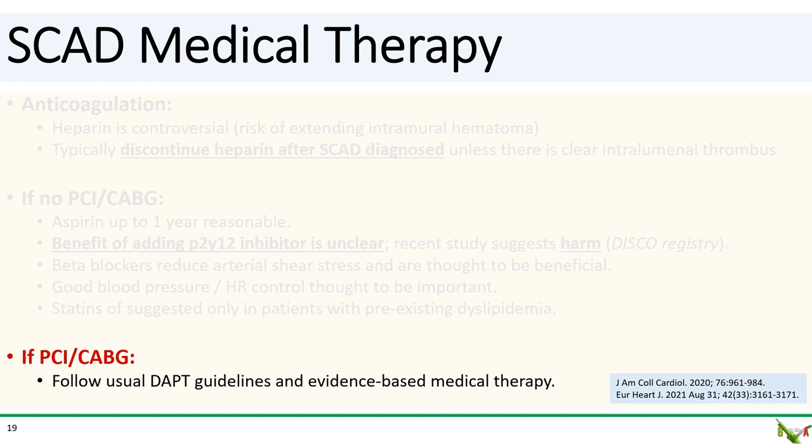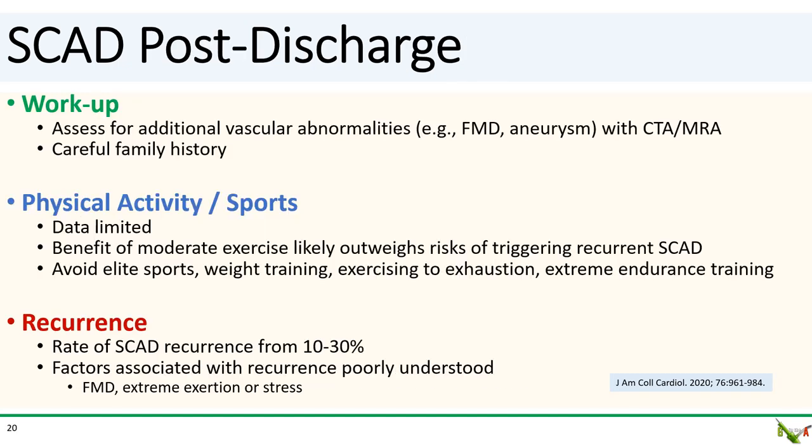If the patient was unstable and did undergo PCI or CABG, then the usual DAPT guidelines apply. There is limited data on post-SCAD management as well. SCAD patients often do have additional vascular abnormalities, classically fibromuscular dysplasia or FMD, so CTA or MRA is generally recommended at some point. Overdoing physical activities such as exercising to exhaustion, extreme endurance training, elite professional sports, or weight training should be avoided. But in general, moderate exercise is likely overall beneficial. The rate of recurrence is thought to be anywhere from 10 to 30 percent, but factors associated with recurrence are not well understood — they're thought to include FMD, extreme exertion, or severe emotional stress.